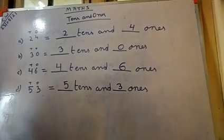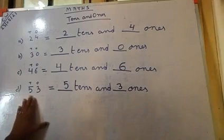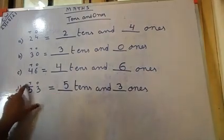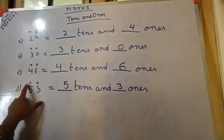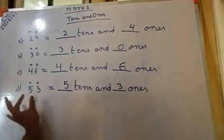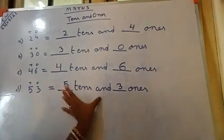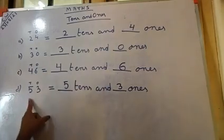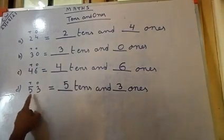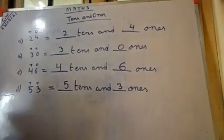You have done this process when you were writing forward and backward counting, and you know that very well. So children, it is very easy for you to understand where to put T and O. While writing, you must write it, otherwise you will be confused. So better you write T and O above the number. It is very important to know which place is the tens place and which place is the ones place. That is all for today. Have a good day. Thank you.